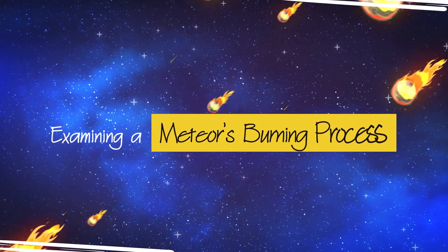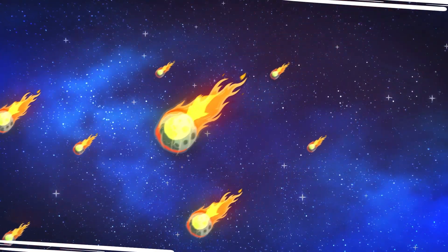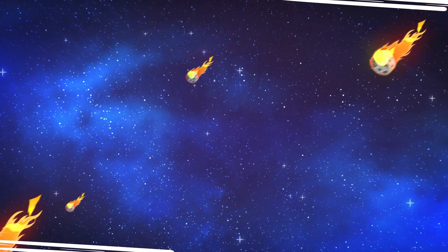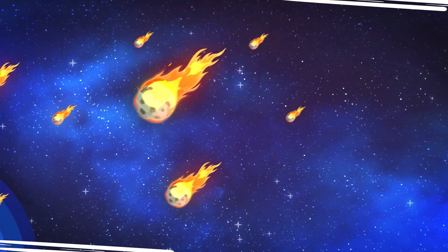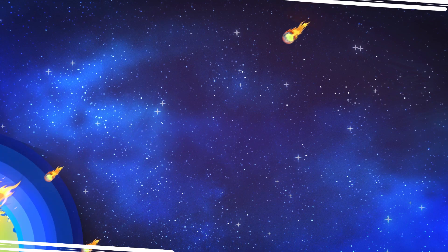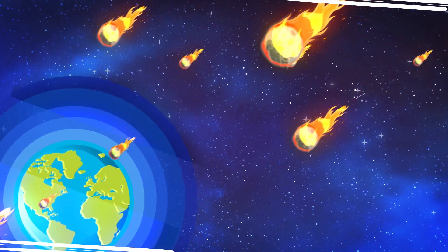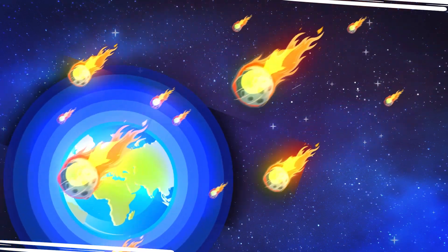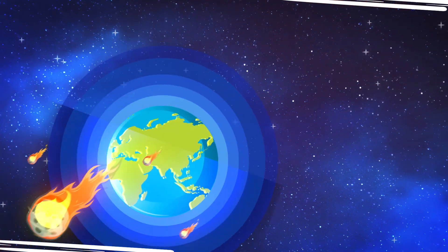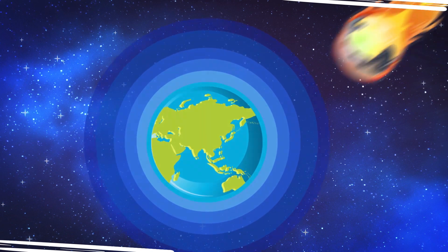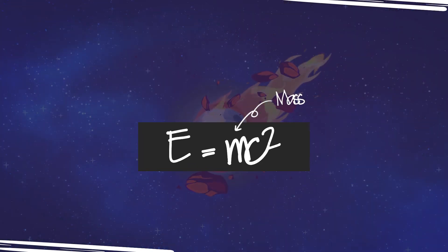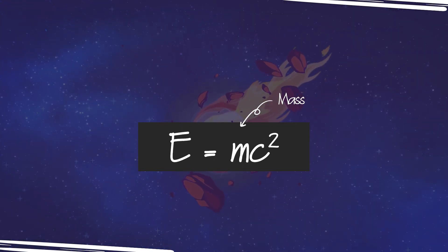Examining a meteor's burning process. When a fast-moving meteor enters the Earth's atmosphere, encountering air, it endures the friction created by the interaction. Upon heating, the meteor's molecules, particles and atoms move faster and faster, increasing thermal energy production. At some point, the meteor burns up or explodes, its mass transforming into energy.